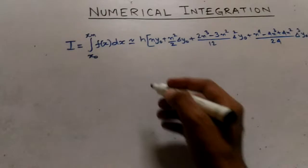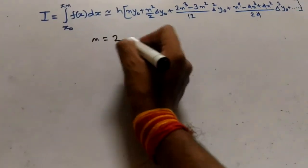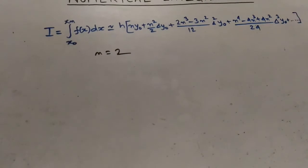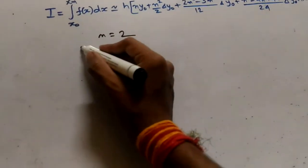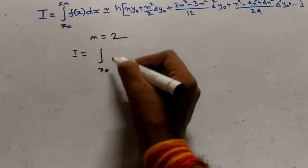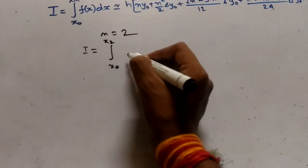On putting n equals to 2, I get the integral from x0 to x2 of f(x)dx.